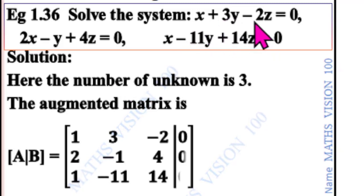The matrix is: 1, 3, minus 2, 0; 2, minus 1, 4, 0; 1, minus 11, 14, 0.